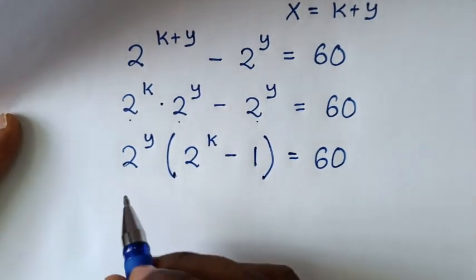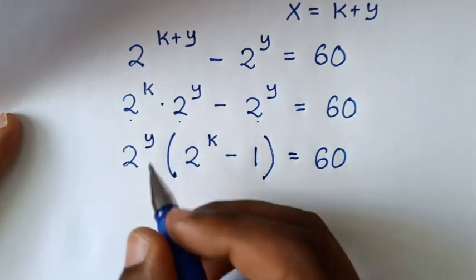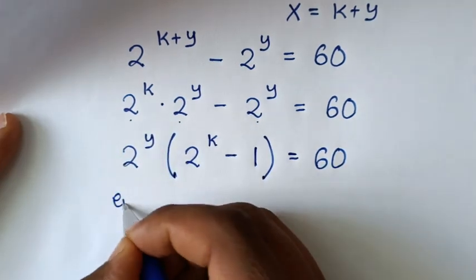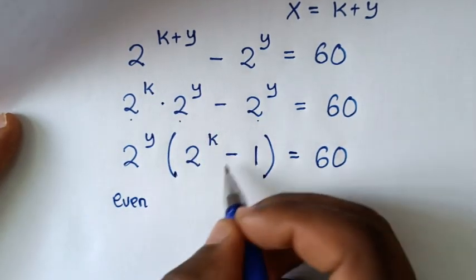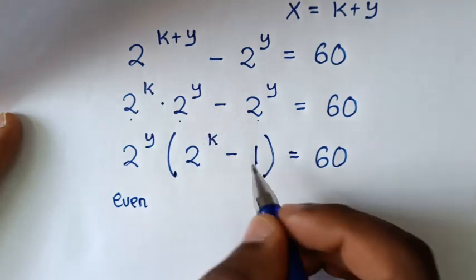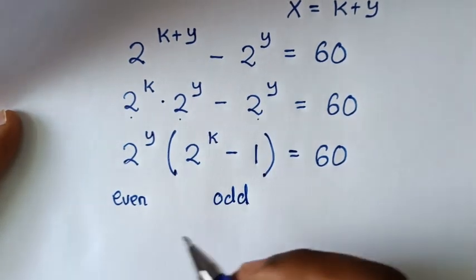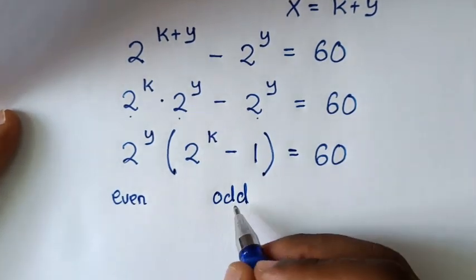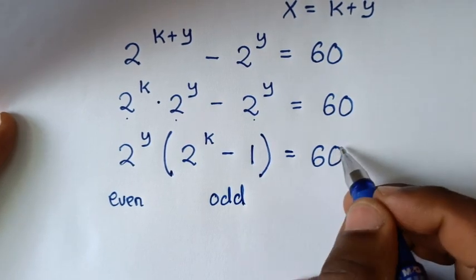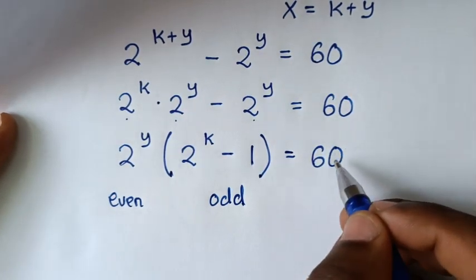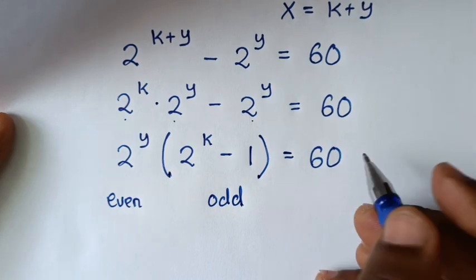From here, 2 to the power of any number is even. So 2 to the power of k is even, and even minus 1 is an odd number. So we have even times odd equals 60. We need to find the factors of 60 such that we get an even number times an odd number.